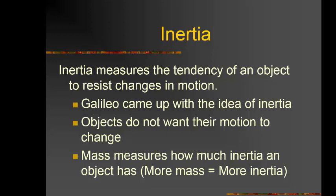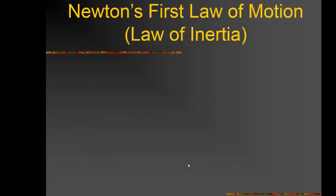The bottom part of the body — like the car seat — stops when the car stops, but the upper part tries to keep moving. Mass measures how much inertia an object has — more mass, more inertia.